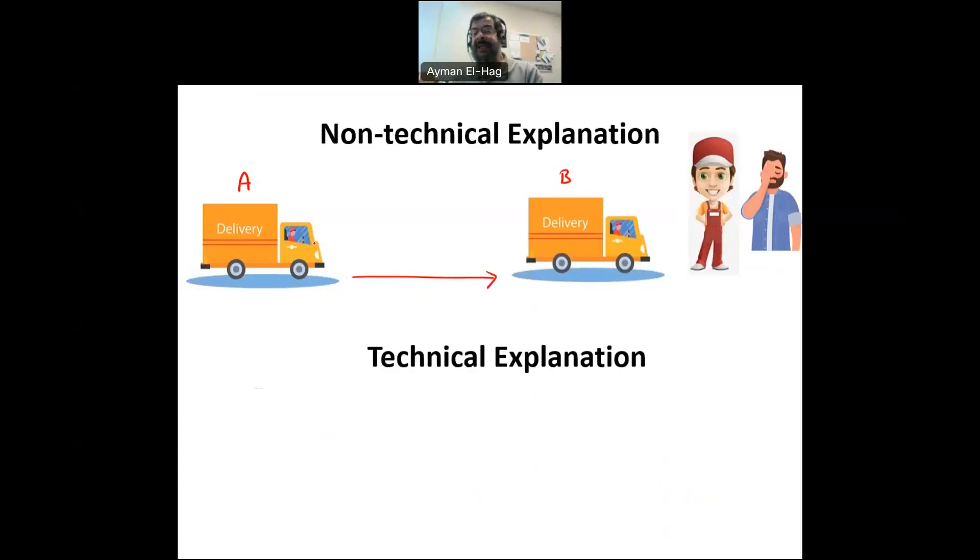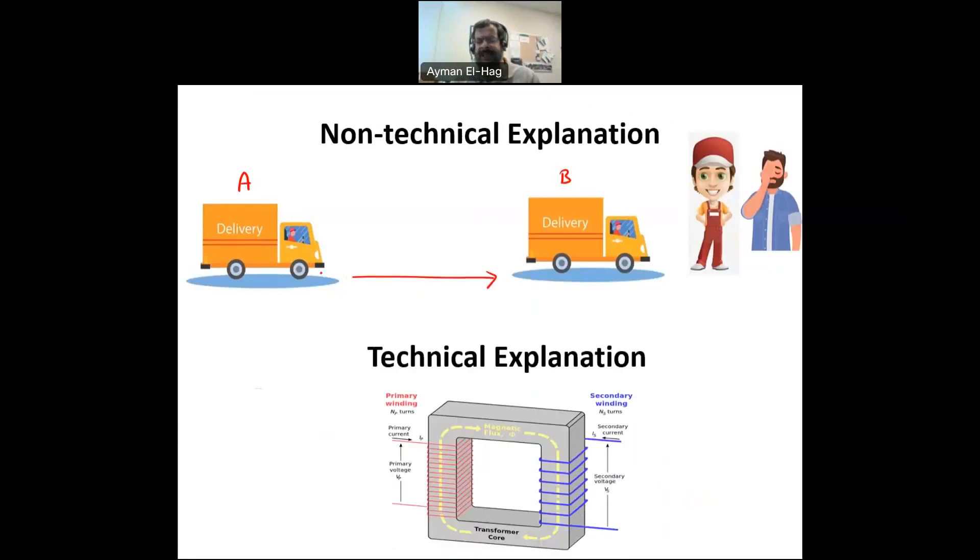And if I give a technical example, the same transformer example, imagine that the secondary side of the transformer is an open circuit. There is no load. So you energize the transformer. It's the same amount of flux there in the core, but you are not delivering any power. So here the reactive power is considered as a loss, as useless amount of power because you are not delivering power from point A to point B.